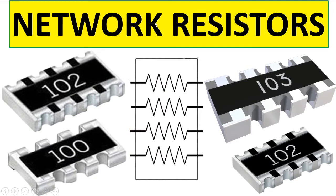Here we have the network resistors. A network resistor is a combination of many resistors — it can contain four, three, five, six, seven, or more. The purpose of a network resistor is to save space on the motherboard. The code number such as 103 means 10 followed by three zeros, and 102 means 10 followed by two zeros, giving 1000 ohms and 100 ohms respectively.